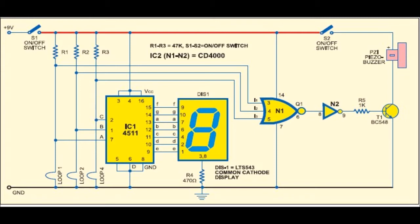If loop 1 is broken, the display will show 1. If 2 or all 3 loops are broken, the display will show the sum of the respective broken loop numbers.